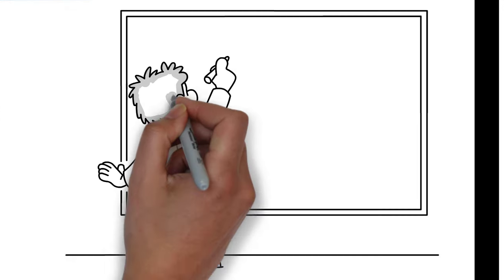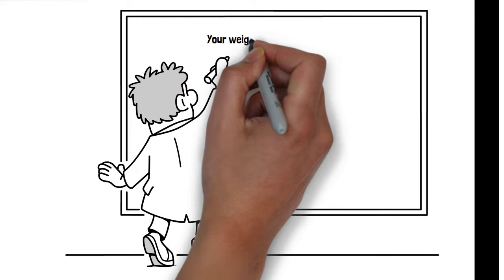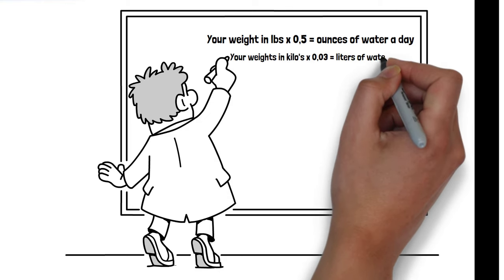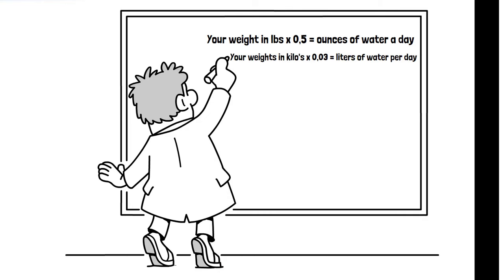To calculate the amount of water you should drink is as following: your weight in pounds times 0.5 is the amount of ounces of water a day, or your weight in kilos times 0.03 is the amount of liters of water per day.